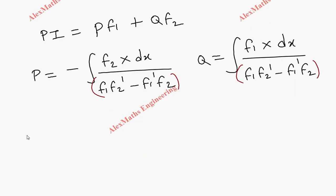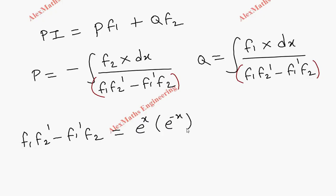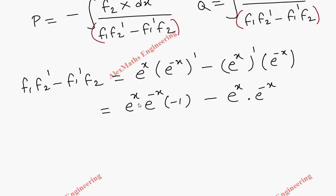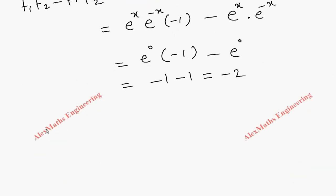Since both denominators are the same, let's find the value of the denominator term f1·f2' - f1'·f2. Here: eˣ · (e^(-x) · (-1)) - eˣ · e^(-x). When bases are the same we add the powers: e⁰·(-1) - e⁰ = -1 - 1 = -2. So the denominator is -2.